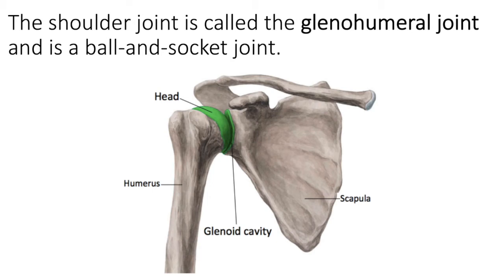The shoulder joint is called the glenohumeral joint and it's a ball and socket joint. Recall that ball and socket joints can do flexion and extension, abduction and adduction, circumduction, and rotation. Important components of this joint are the glenoid cavity — the shallow surface of the scapula — that receives the head of the humerus, and that's what allows the nice rounded movement of the ball and socket joint.